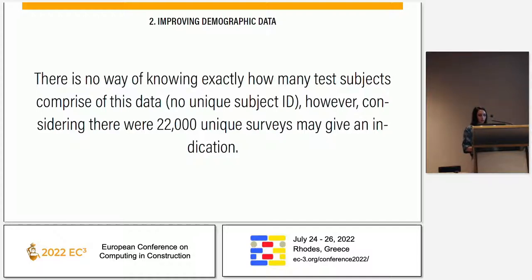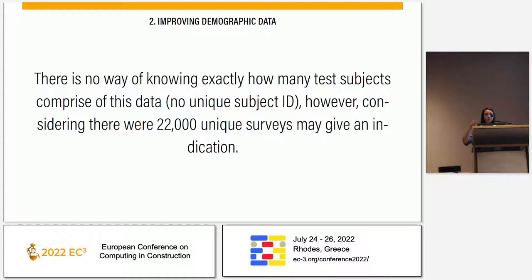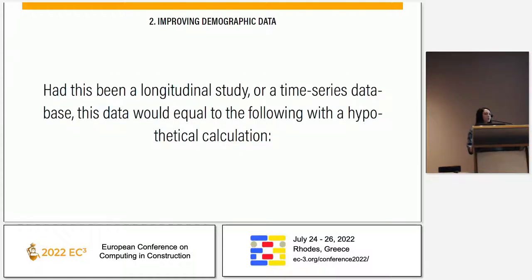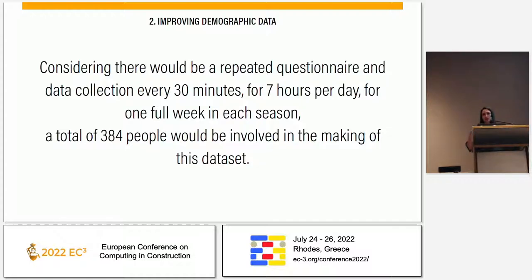Coming to the second point — demographics — the current database does not have any unique subject ID. There is no way to understand if one person continued to respond to the same questions under different conditions. From the medical side of thermal physiology, you can never compare one person's physiological reaction to another's, because your resting heart rate will be much different than mine. You have to compare the same person under different conditions. With this database, we don't even know how many people were questioned — we just know the number of surveys. But let's assume it was a longitudinal study, a time-series database, where the same people were questioned throughout different periods.